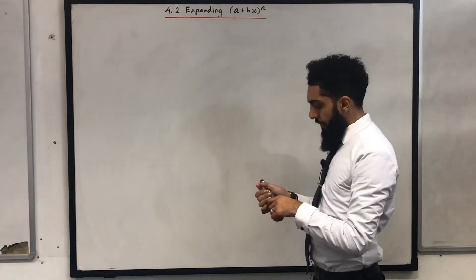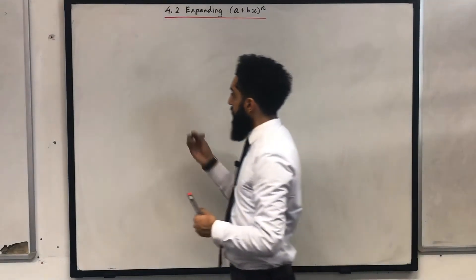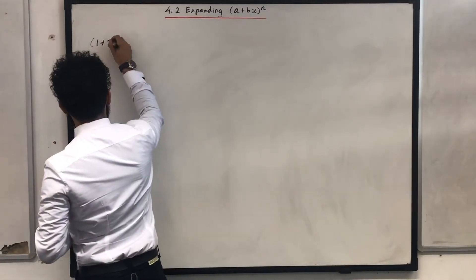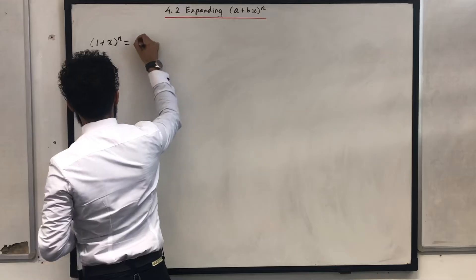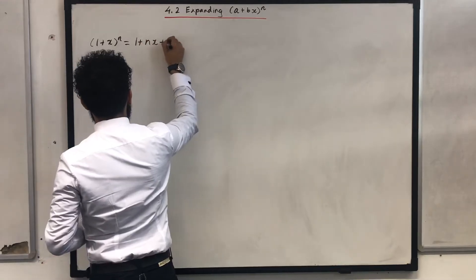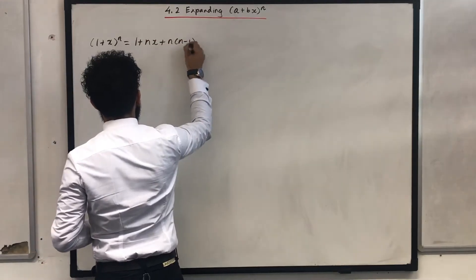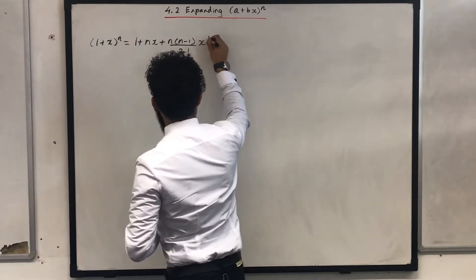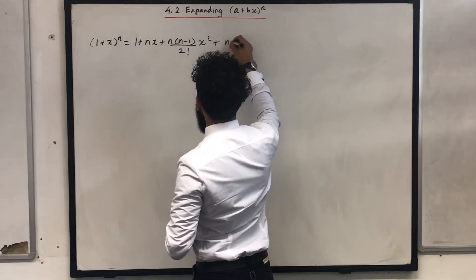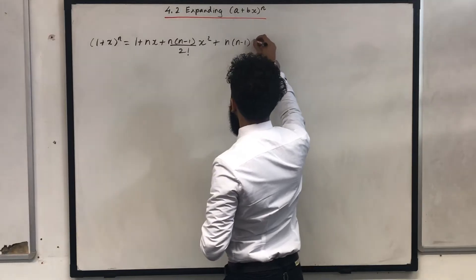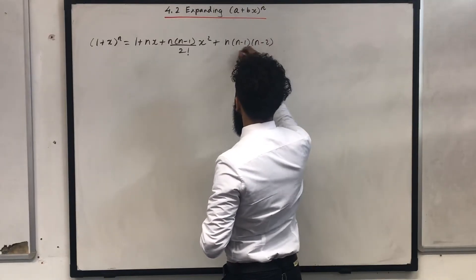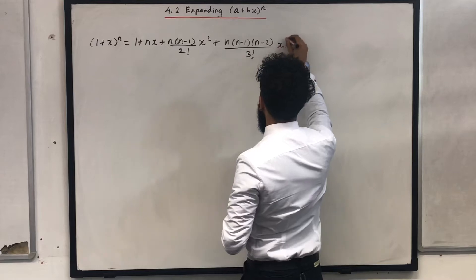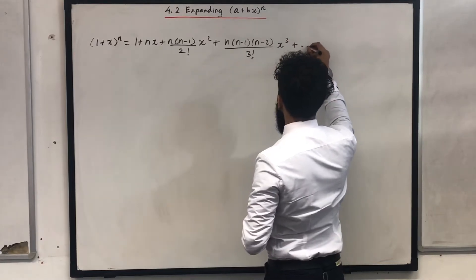And that formula is as follows: (1 + x) to the power n equals 1 plus nx plus n(n−1) all over 2 factorial, times x squared, plus n(n−1)(n−2) all over 3 factorial, times x cubed, plus dot dot dot.